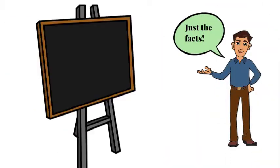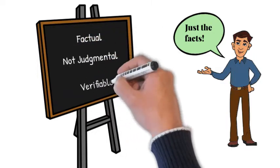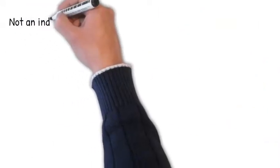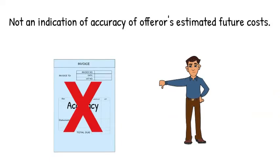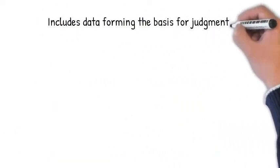Cost or pricing data are factual, they're not judgmental, and they are verifiable. While they do not indicate the accuracy of the prospective contractor's judgment about estimated future costs or projections, they do include the data forming the basis for that judgment.